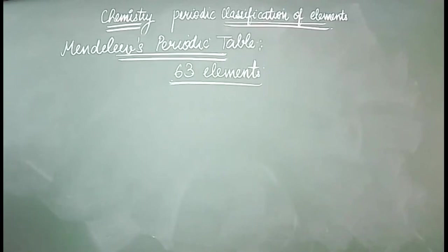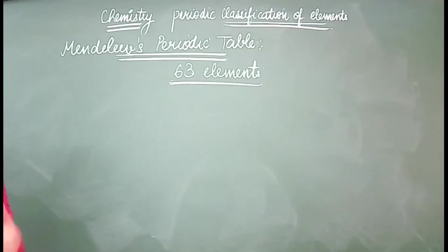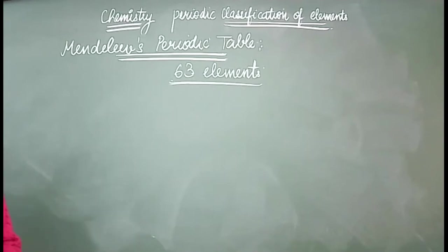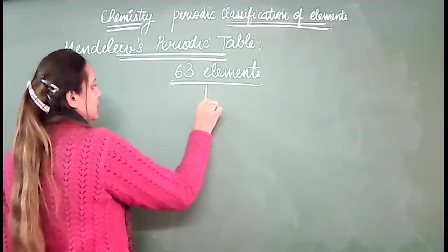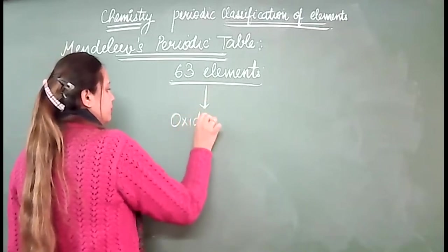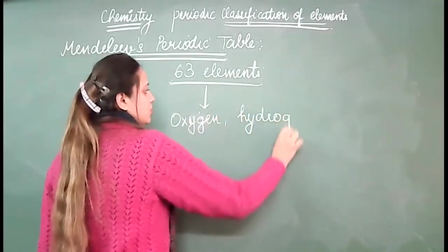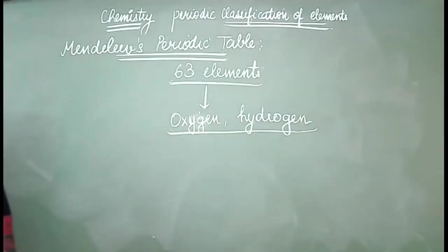One of the main and important things is that he didn't take the elements simply in their elemental form. What he concluded was that these elements form maximum compounds with oxygen and hydrogen. So he actually took the compounds — oxides and hydrides — of these elements with oxygen and hydrogen.